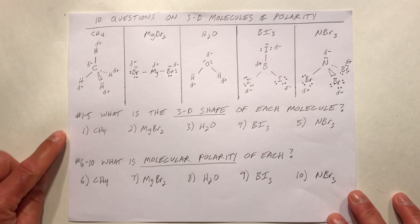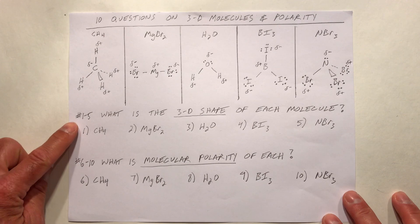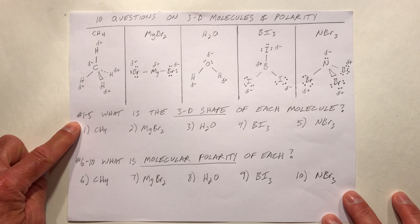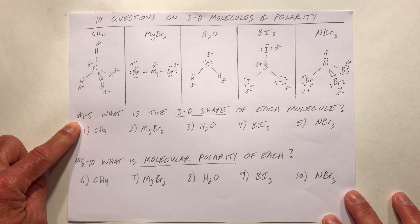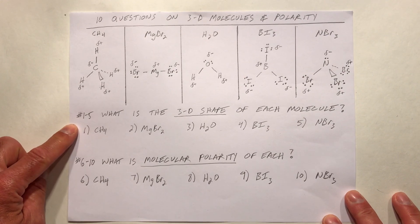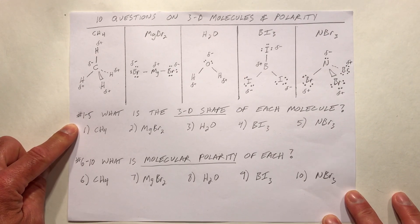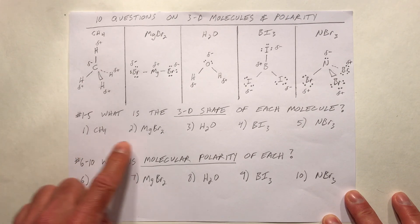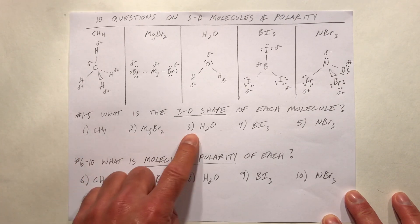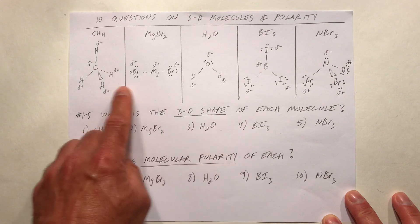For numbers one through five, answer: what is the three-dimensional shape of each molecule? In other words, what's the name? Two-atom linear, three-atom linear, trigonal planar, tetrahedral, pyramidal, bent — tell me what the name of each structure is.